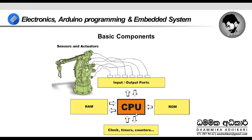In the case of the embedded system, we can use the input-output port. We have to use the input port for the input port. This input process will be generated by the actuator and output port.